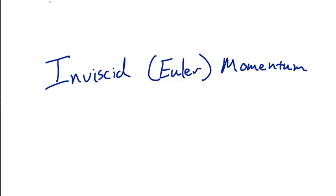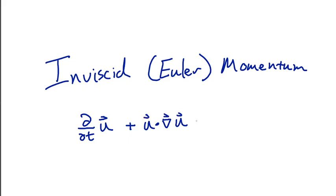We're going to start our exploration of fluid dynamics by first meeting the inviscid or Euler momentum equation. This is the equation that governs how vector velocity u changes in time. The ways that velocity changes are by either advection — by being carried by velocities in the system — or by forces. The version of the inviscid Euler equation we're going to start with right now will only have one force: the pressure gradient force.